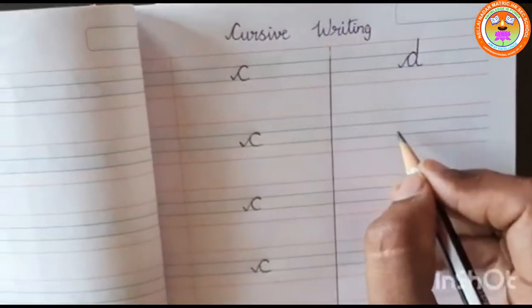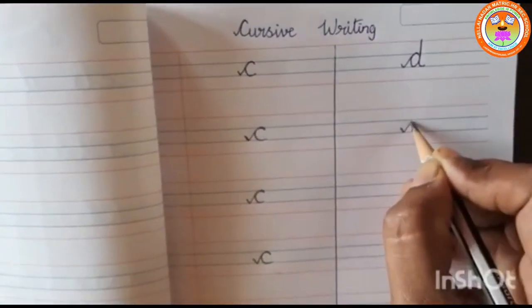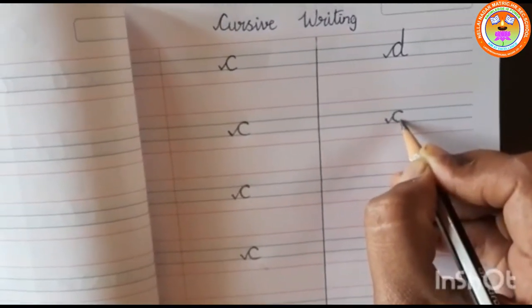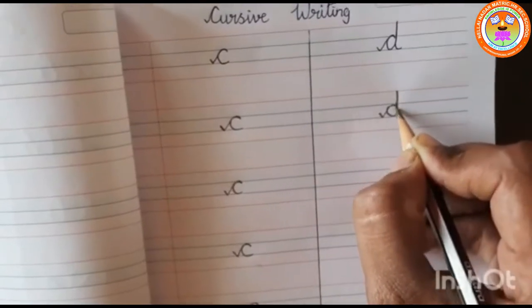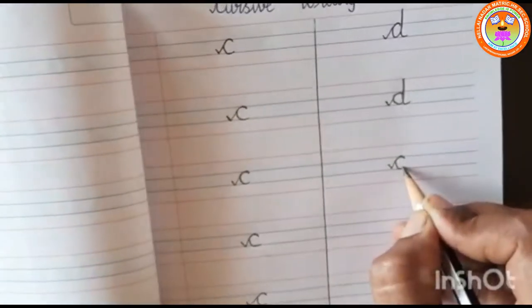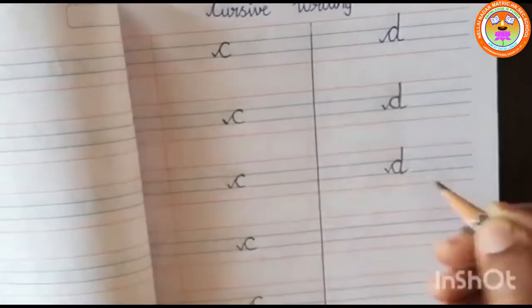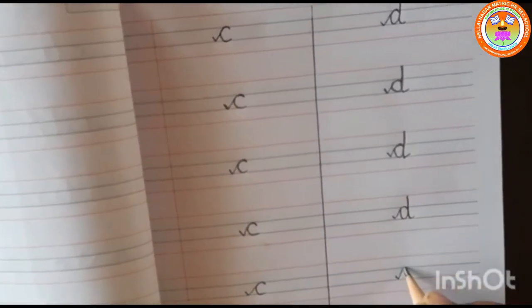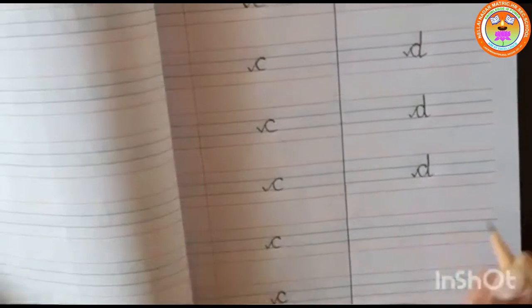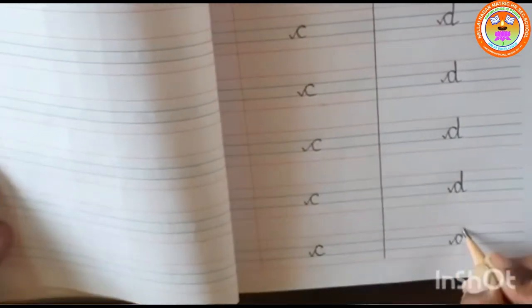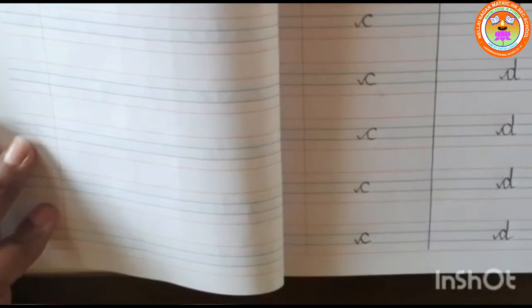We will go to letter D. To write letter D, first write C, touch the blue line and from down, go, touch the red line and same line come back, put tail. Again, first write C and from blue line to red line, standing line and again come back and put tail. Write like this in all the lines. Kids, keep on practicing till you get it correctly. We will meet in the next class. Take care.